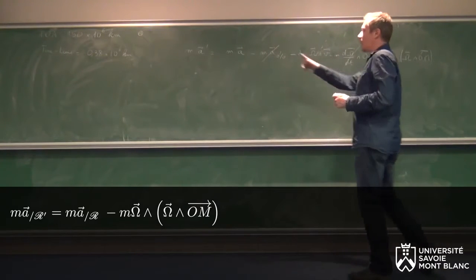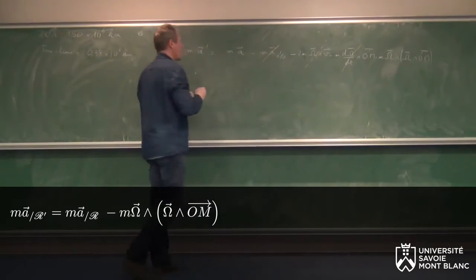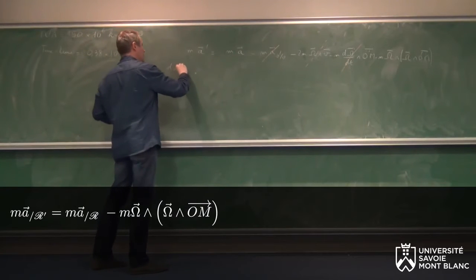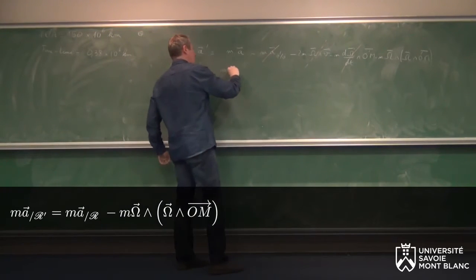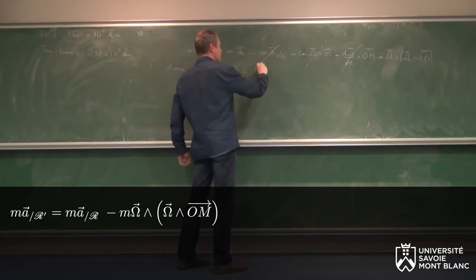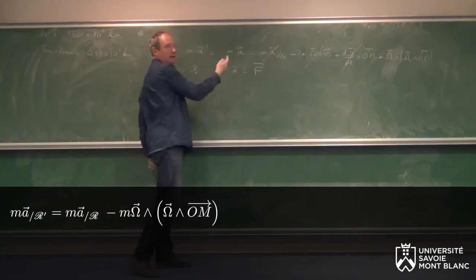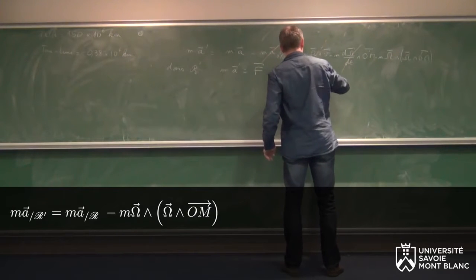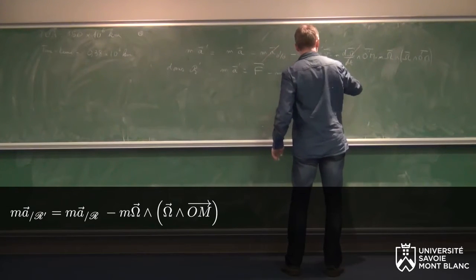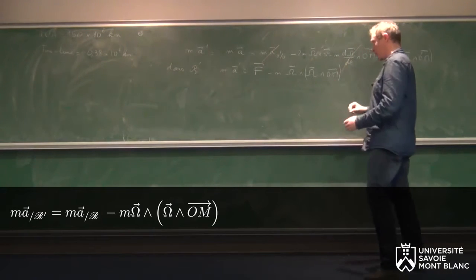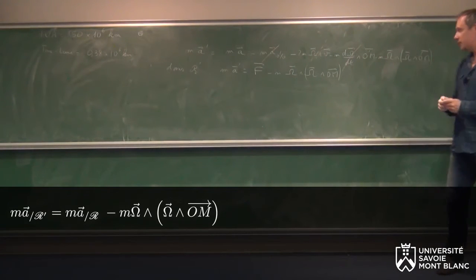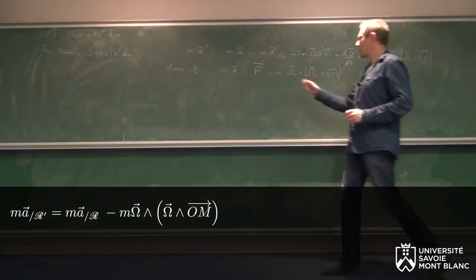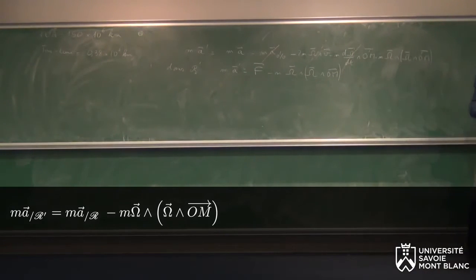Il reste finalement MA' = MA, c'est-à-dire que le bonhomme dans R' écrit que MA' égale la somme des forces réelles plus le terme −Mω × (ω × OM). C'est ce terme qu'on appelle force centrifuge, et on va voir tout de suite pourquoi.